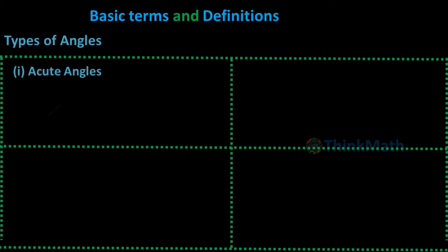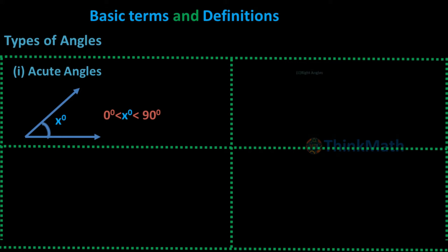1. Acute Angle: An angle x, where 0° < x° < 90°, is called an acute angle.